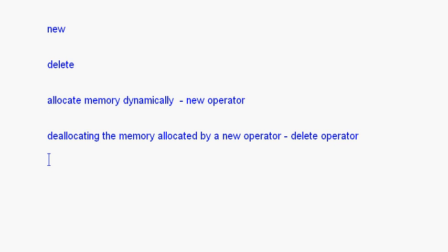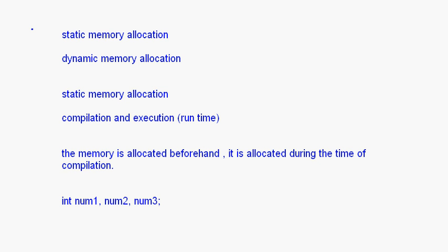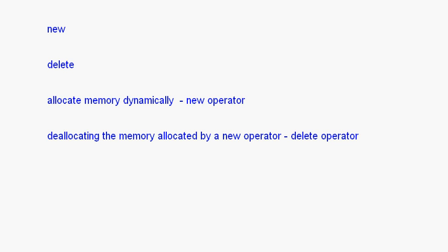This is basically an introduction to pointers, where we have seen what pointers are, what is to be stored inside a pointer, and what is the difference between static memory allocation and dynamic memory allocation. Pointers can be used for dynamic memory allocation, whereas for static allocation we do not need pointers. We have also seen the new and delete operators. In the next session we will see how to actually declare a pointer, how to initialize a pointer, and how address resolution is done with the help of pointers.